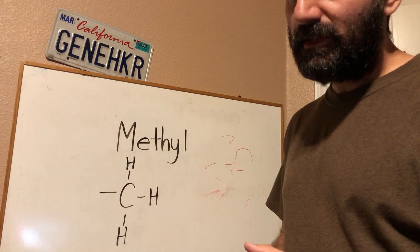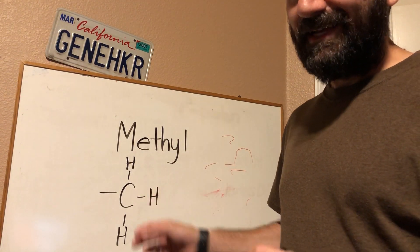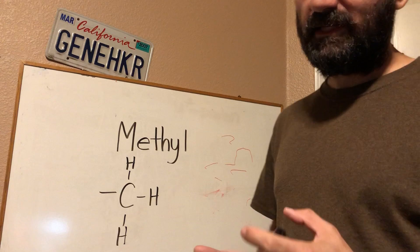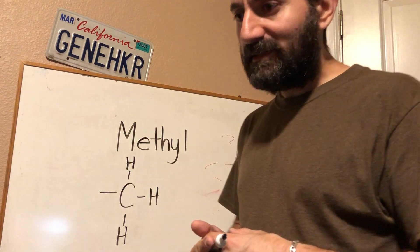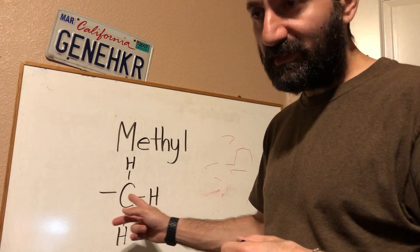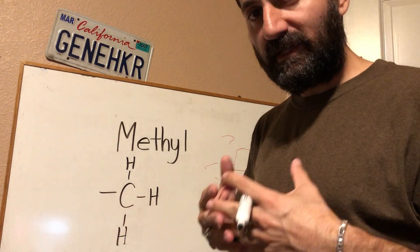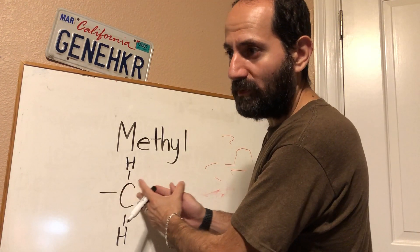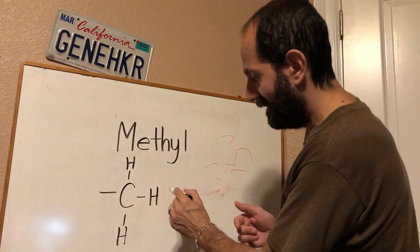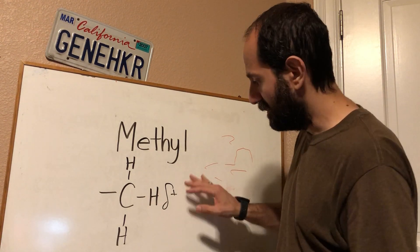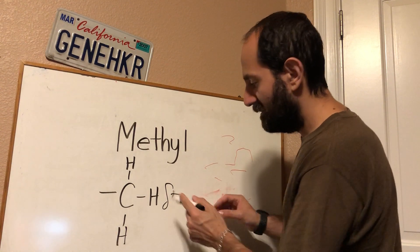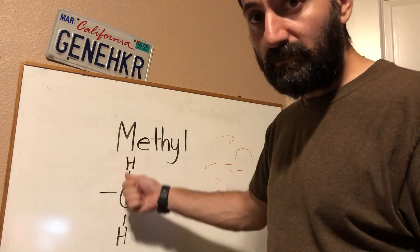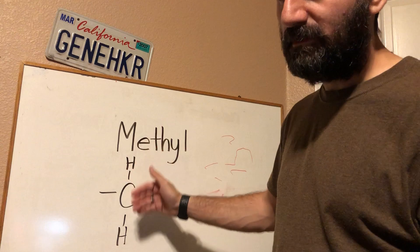Methyl groups are comprised of carbon and hydrogen only. To review, carbon and hydrogen have roughly the same electronegativity. What does that mean? That means when they form covalent bonds, when they're sharing electrons, they're sharing those electrons evenly. There's no reason the electrons would spend more time with the carbon or more time with the hydrogen, so you're not going to get any partial positive or partial negative charges — no charges at all. Because of that, these are considered nonpolar covalent bonds between carbon and hydrogen.